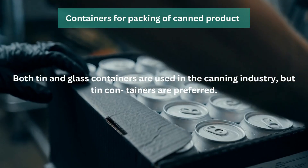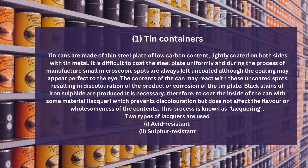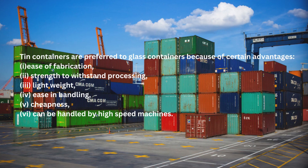Containers for Packaging of Canned Products: Both tin and glass containers are used in the canning industry, but tin containers are preferred. Tin containers are made of thin steel plates of low carbon content, lightly coated on both sides with tin metal. It is difficult to coat the steel plate uniformly, and during manufacturing, small microscopic spots are left uncoated. The contents may react with these uncoated spots, resulting in discoloration or corrosion. The inside of the can is coated with a lacquer which prevents discoloration without affecting flavor. Two types of lacquering are used: acid resistant and sulfur resistant. Tin containers are preferred due to ease of fabrication, strength, light weight, easy handling, low cost, and suitability for high-speed machines.